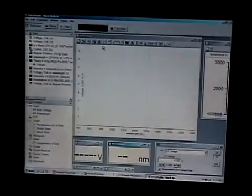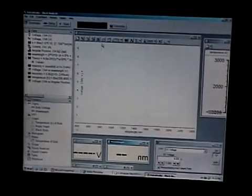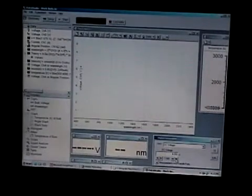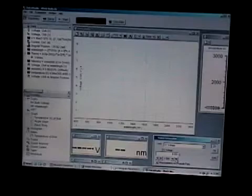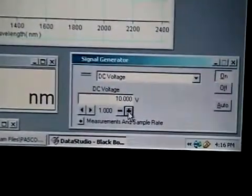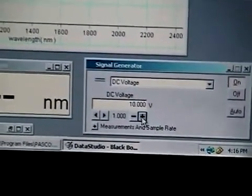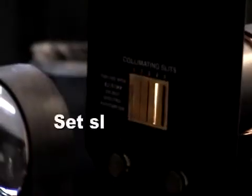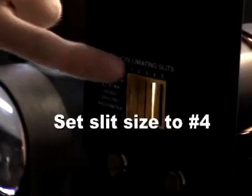And the first thing we need to do is see how our optics are aligned and see how things look. So what I'll do is I will turn on my signal generator here and turn the voltage up to 10 volts. That's lighting up the lamp inside the black body apparatus. It's a tungsten filament, so we are sure to get a very broad spectrum light source.